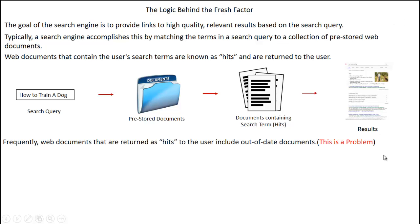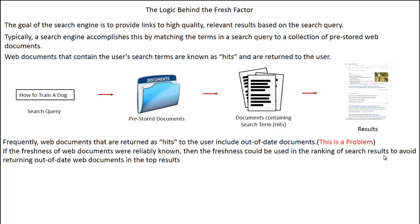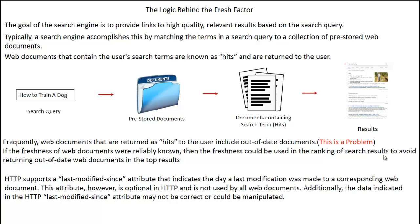This is a typical search engine: you query it for your search term, it queries pre-stored web documents, and if they match they're returned as hits and displayed in the results. But here's the problem — frequently, web documents returned as hits include out-of-date documents. If the freshness of web documents were reliably known, that freshness could be used in ranking to avoid returning out-of-date content in the top results. HTTP supports a last-modified-since attribute indicating when a modification was made, but this attribute is optional and the data it provides may not be correct or could be manipulated.